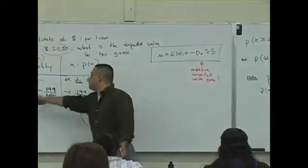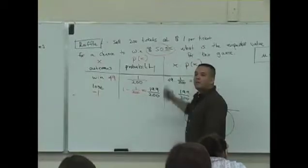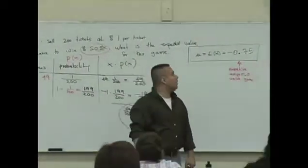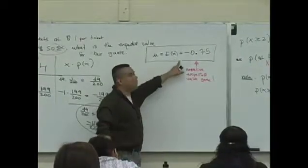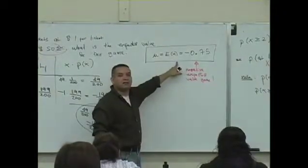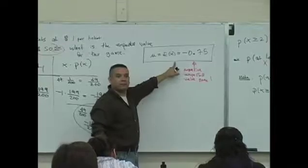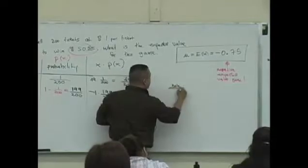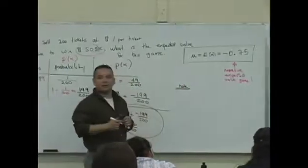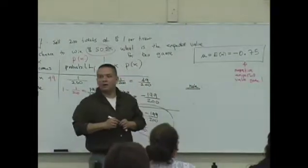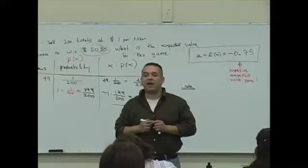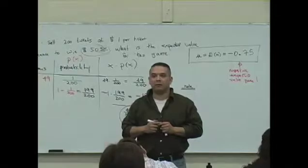One person wins and gets that amount of money, but many more people lose and bring in much more money. So you can think of every person donating 75 cents to that raffle. And what does this have to do with Las Vegas? Every game in Las Vegas is a negative expected value game.